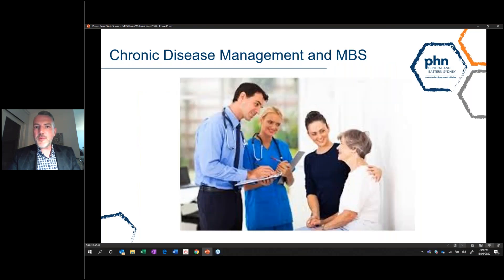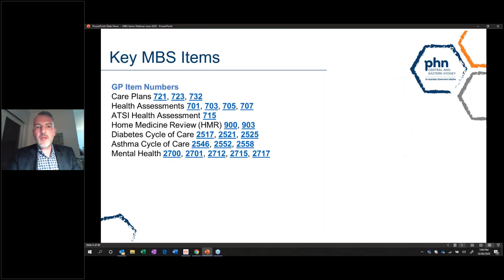Starting with chronic disease management and MBS: the key item numbers — and I won't go through the actual specific numbers — fall under care plans, health assessments, Aboriginal and Torres Strait Islander health assessments, home medicine review, diabetes cycle of care, asthma cycle of care, and mental health. Those are the key item numbers and we'll share those with you as a quick reference guide.